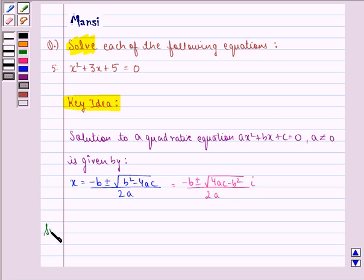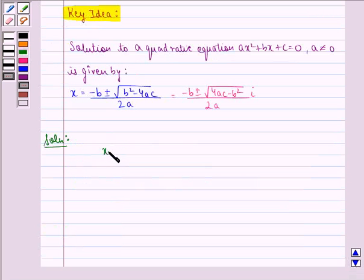Now we start with the solution to this question. The equation given to us is x² + 3x + 5 = 0. If we compare this equation with ax² + bx + c = 0, we get a = 1, b = 3, and c = 5.